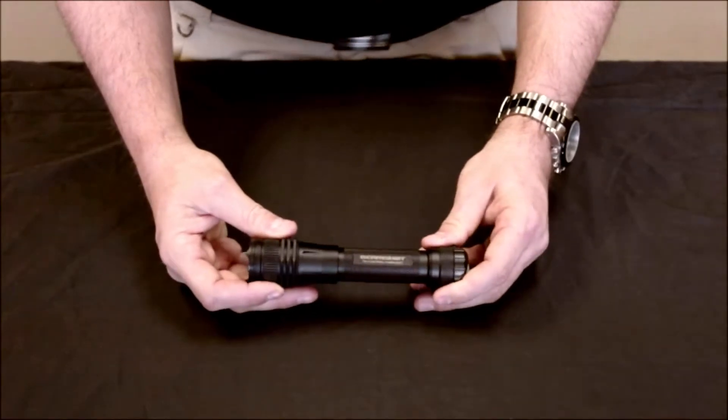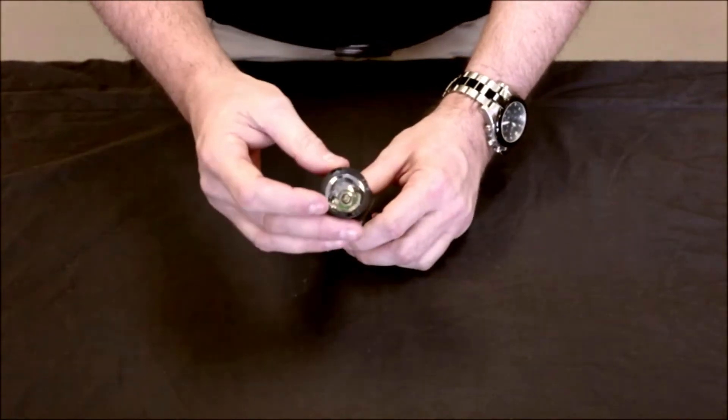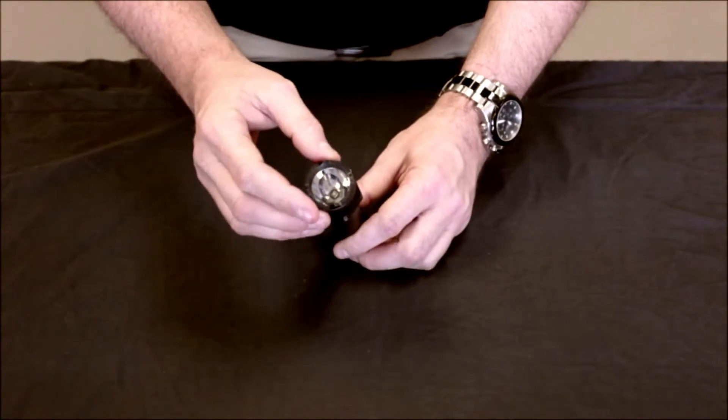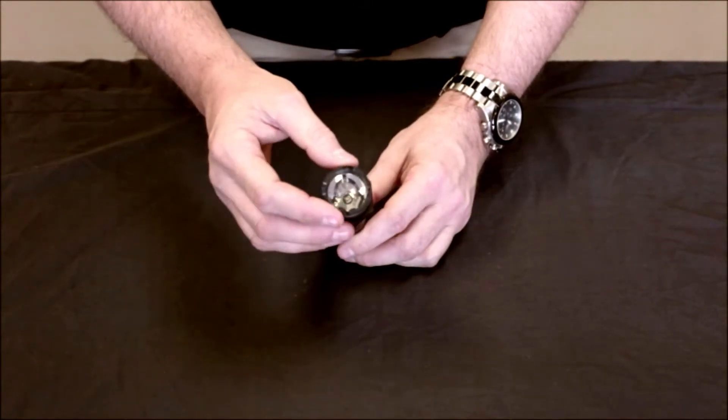Here's a close up view of the TD-5X and TD-4X. The business center of the flashlight has a case hardened steel bezel which again can be used to break glass in an emergency situation or possibly used for self defense.